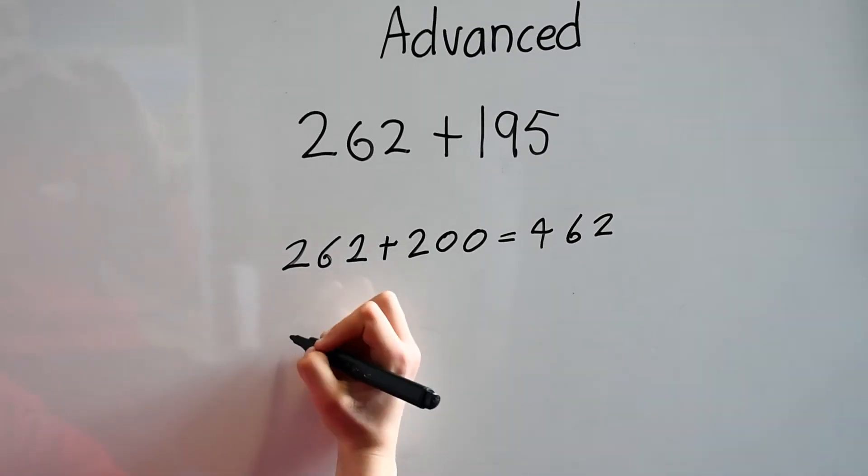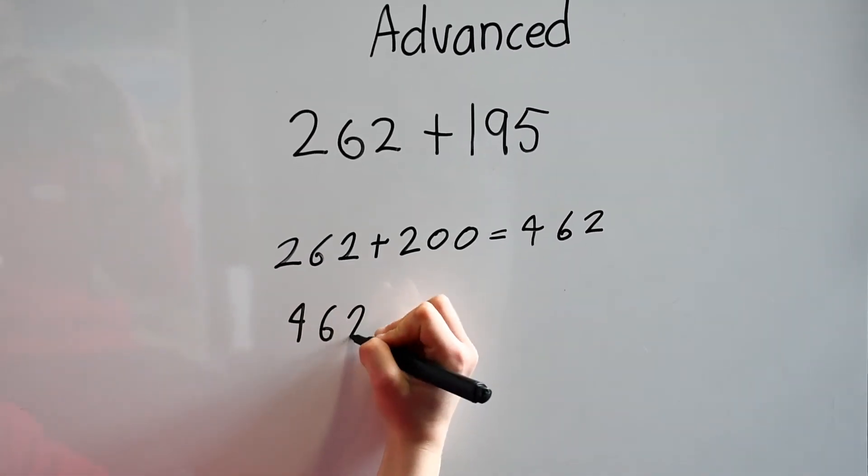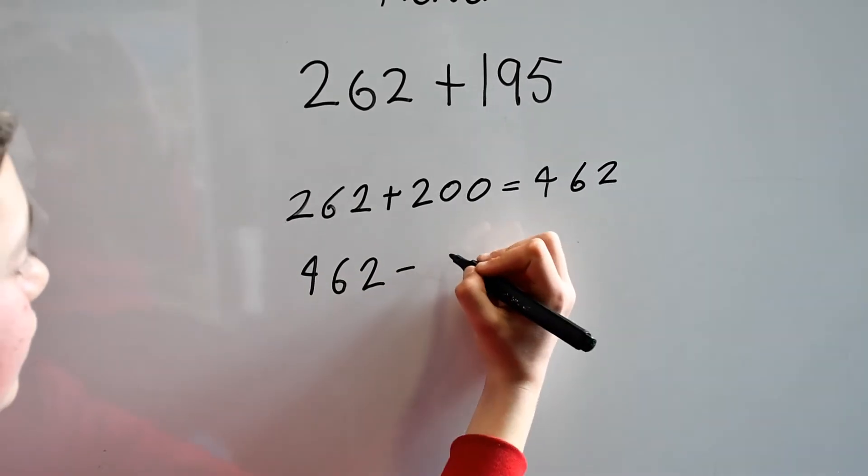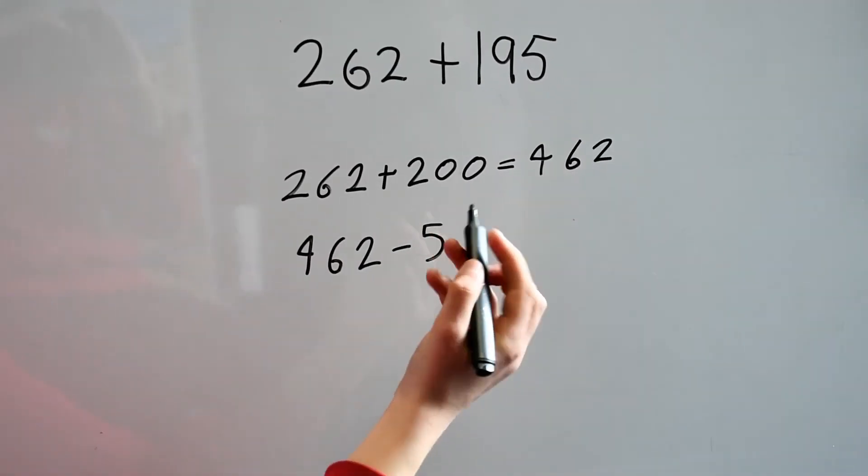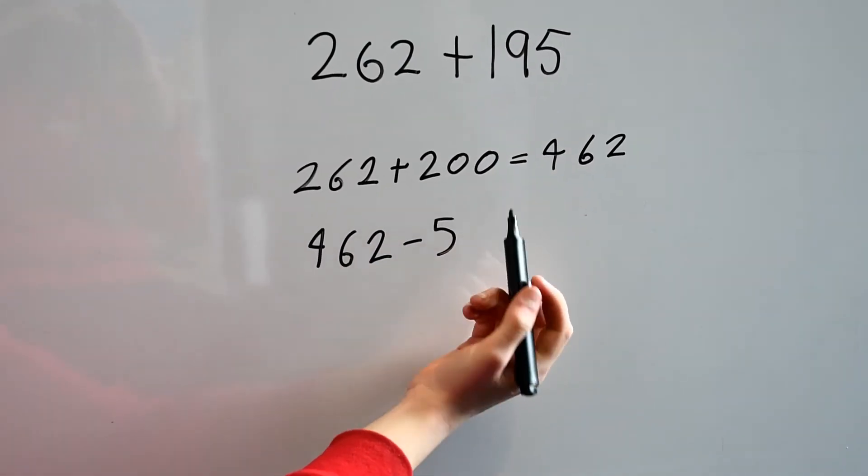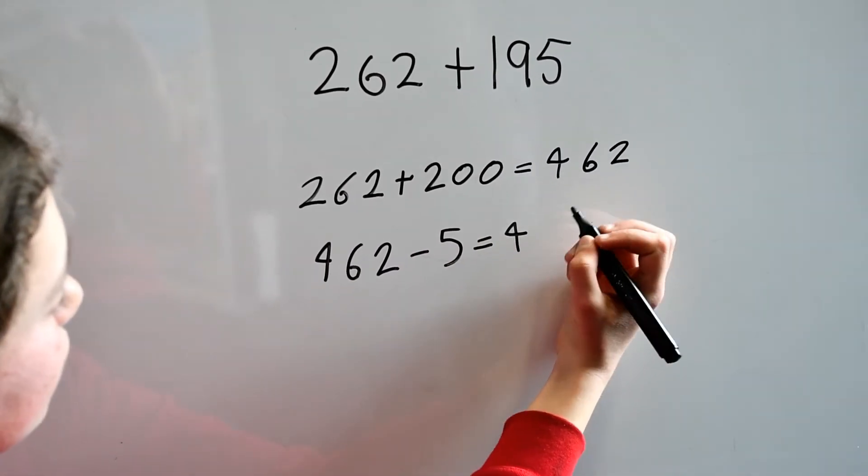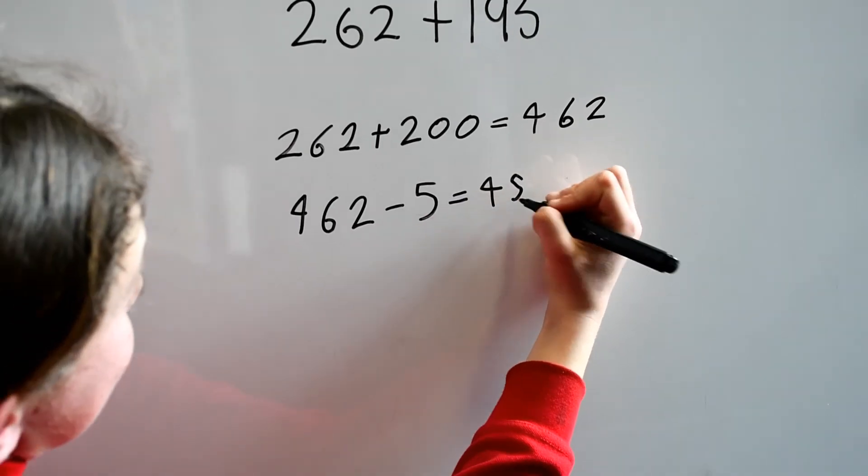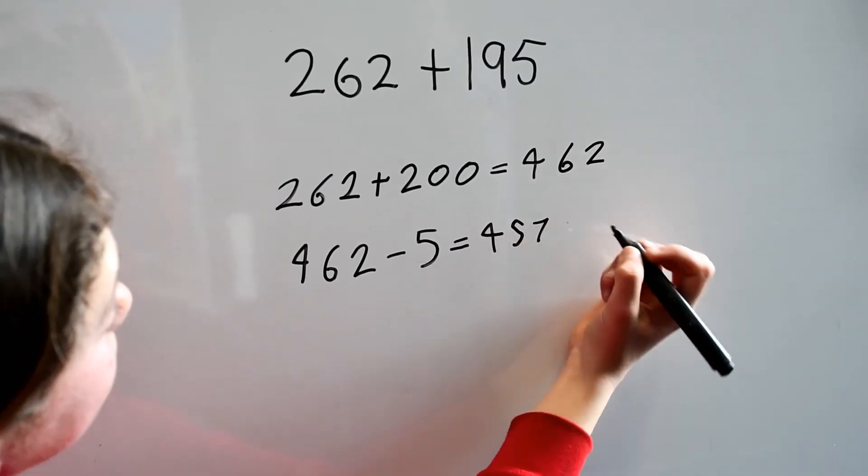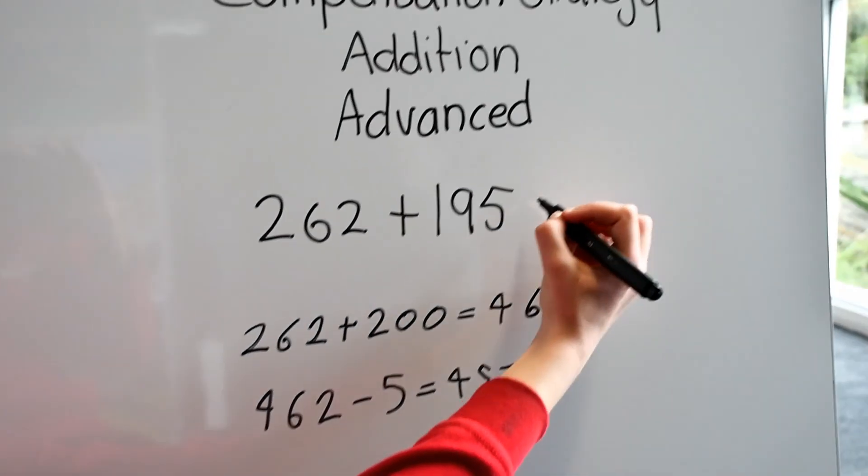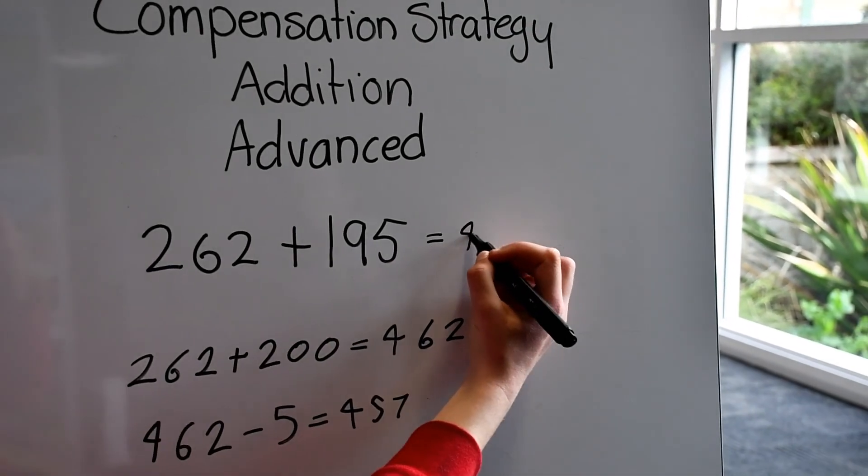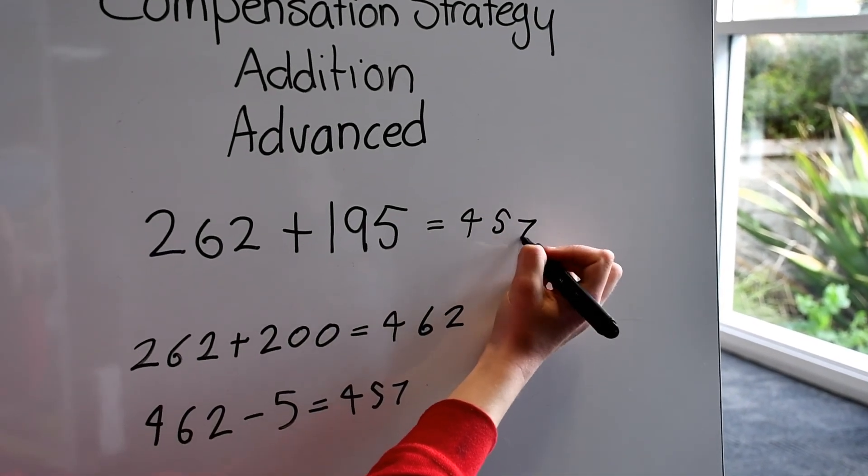Now 462 take away 5 because we added 5 earlier equals 457. So our answer is 457.